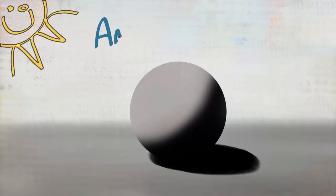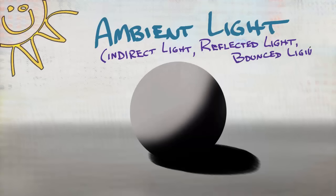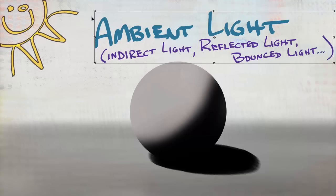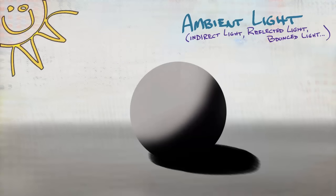Shadows have light. The light we see in shadow is called ambient light, and we can't understand ambient occlusion without first understanding ambient light. Ambient light is sometimes referred to as indirect light, reflected light, or bounced light — it depends on who you're talking to, but they all mean the same thing. To remind us: ambient light is found in shadow.